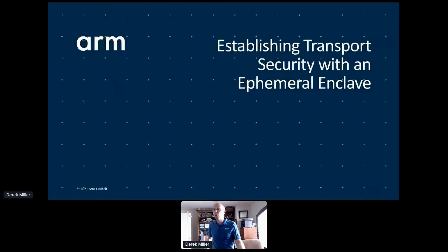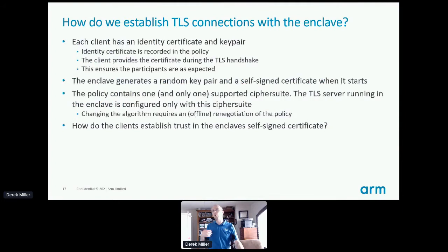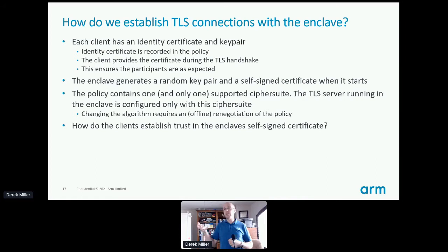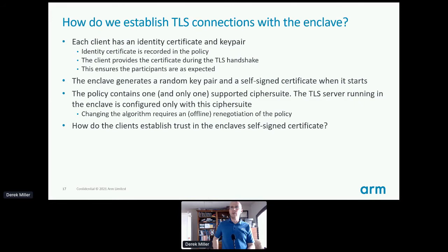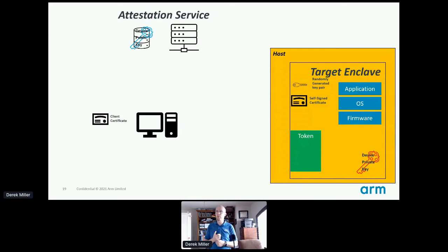Now I'll talk about how we establish trust and transport security with an ephemeral enclave. Each client has an identity certificate and a key pair; that identity certificate is recorded in the policy. The client provides that certificate during the TLS handshake so we know who the participants are. The enclave itself, when it boots, generates a random key pair and a self-signed certificate. The policy contains one and only one supported ciphersuite — to change the algorithm you have to update your policy. This was a deliberate decision. To establish trust in that self-signed certificate, we use attestation.